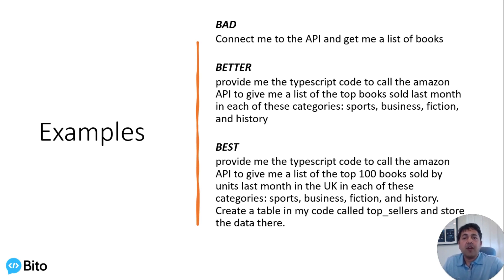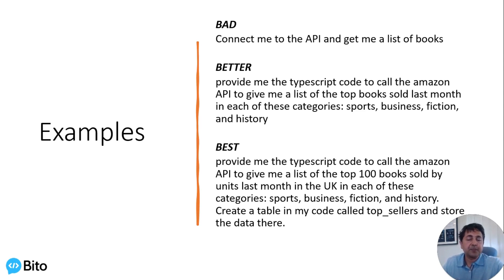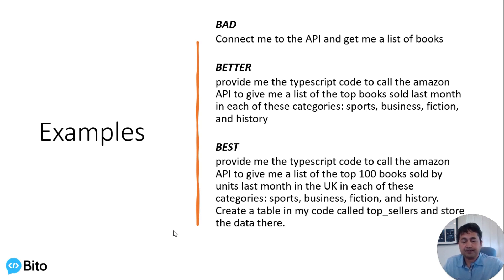And here's the best prompt: 'Provide me the TypeScript code to call the Amazon API to give me a list of the top 100 books sold by units last month in the UK in each of these categories. Create a table in my code called top_sellers and store the data there.' It takes about 20 seconds to write this prompt versus the bad prompt, but the results will be incredibly more powerful — basically giving you code you can run with right away. The vague prompt leaves you spending a lot more time editing. This is probably the single most important tip we can provide.